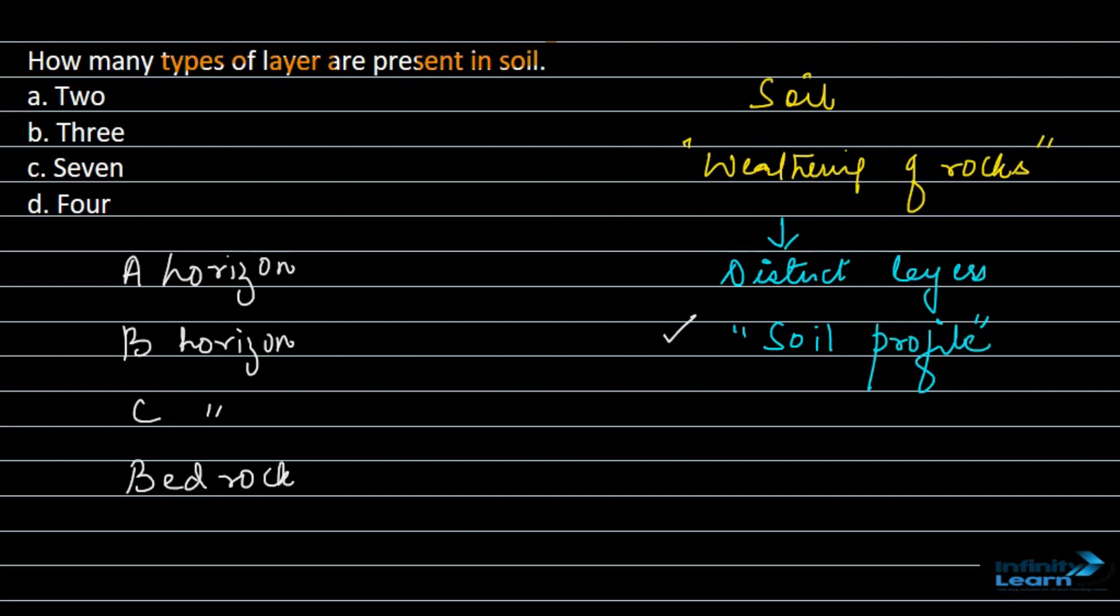Okay, and these layers are different from each other. Like A horizon is quite soft and it has got a lot of humus in it.